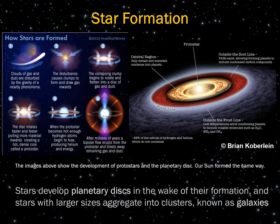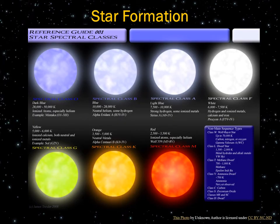Stars develop planetary disks in the wake of their formation, and stars with larger sizes will aggregate into clusters, which we call galaxies. More than half of all star systems will have two or three central stars, rather than one, like our solar system. Our sun is average in size compared to most stars. It's a spectral class G star, and it produces a yellow color in the light spectrum due to its temperature.